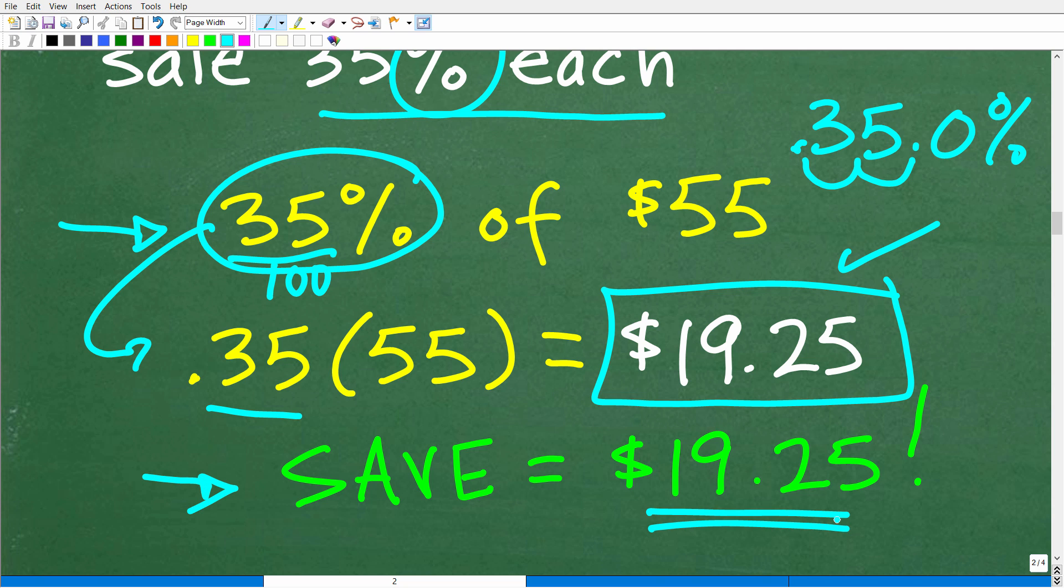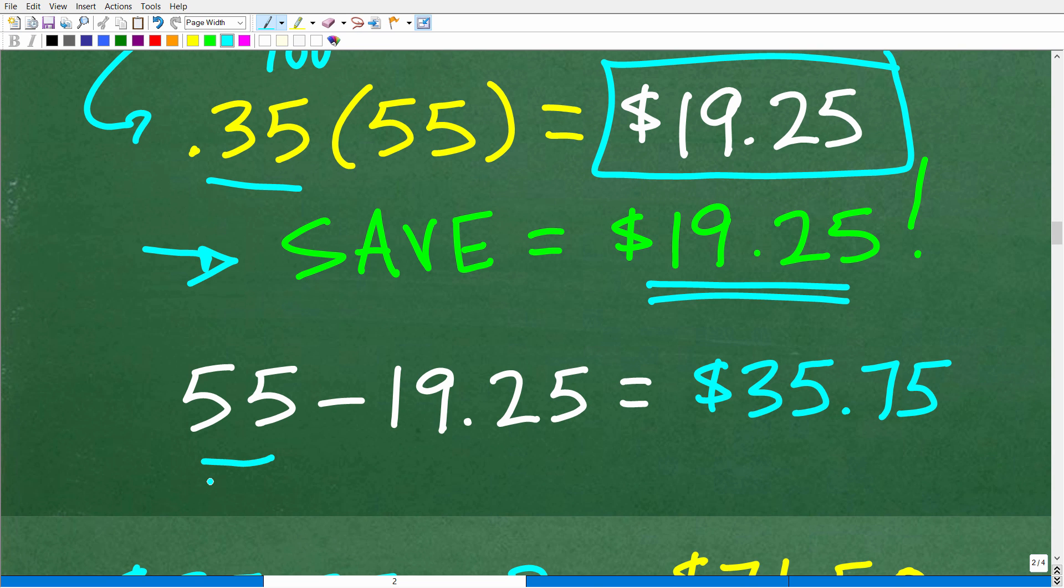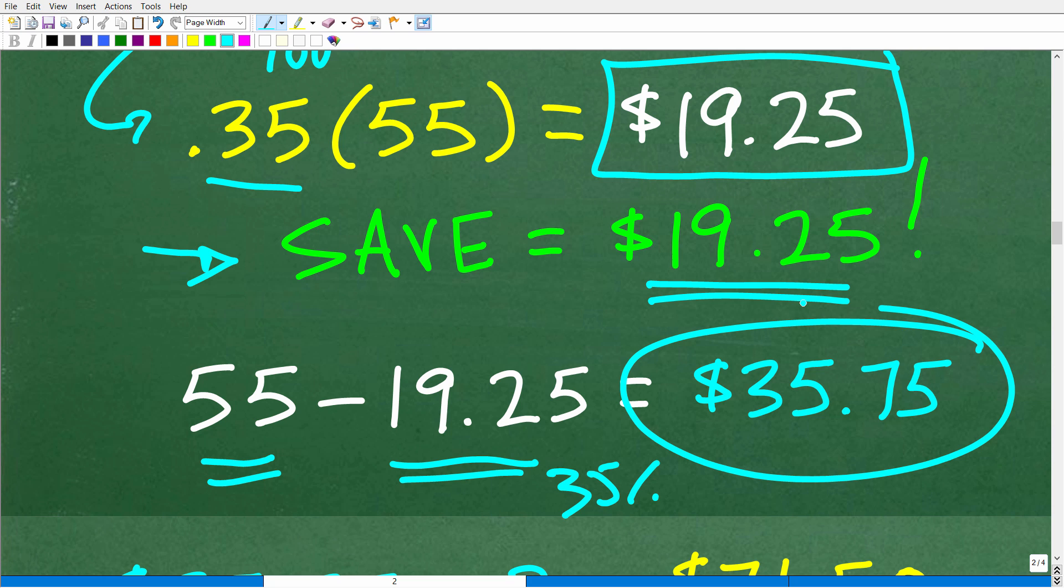This is how much we're going to save. We save $19.25. So now we have to go back to the original price of that widget, which is $55 and take off our 35% discount.